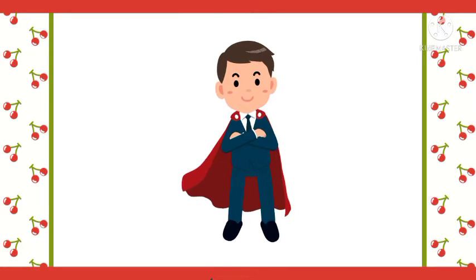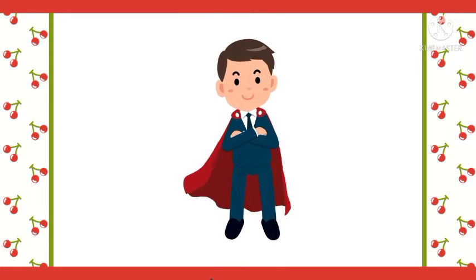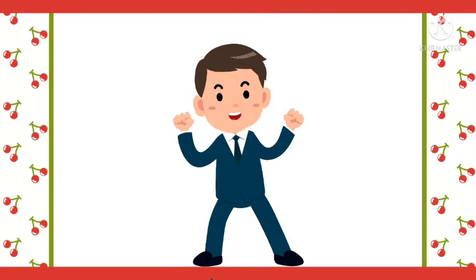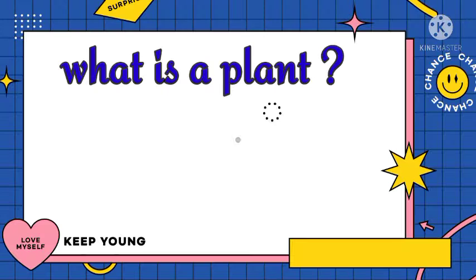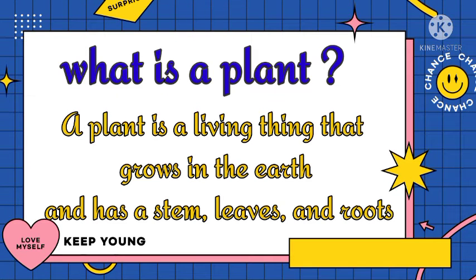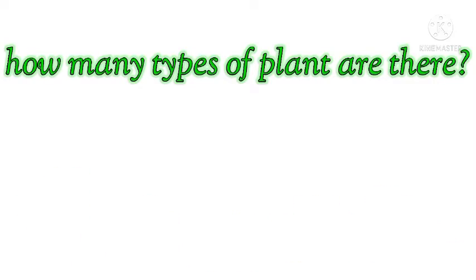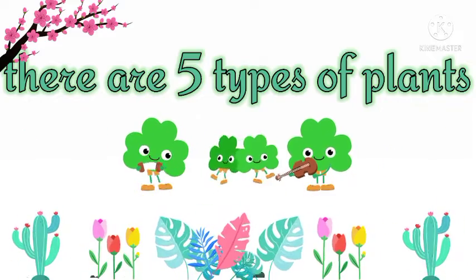Hello friends! Kids For School mein aapka swagat hai. Aaj ka hamara topic hai: Types of Plants. What is a plant? A plant is a living thing that grows in the earth and has a stem, leaves, and roots. Plants living things hote hain jo earth mein ugte hain, inme stem, leaves aur roots hote hain.